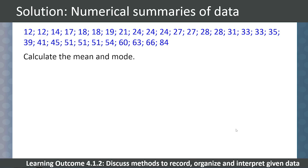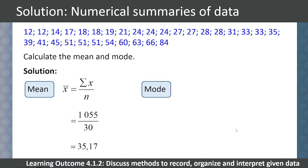Now to calculate the mean and mode. We know that our mean is the sum of all our values divided by the total number of values, which is 1055 over 30, which gives us a mean of 35.17. Our mode is the most common value in our data set. Here we have two modes, 24 and 51.